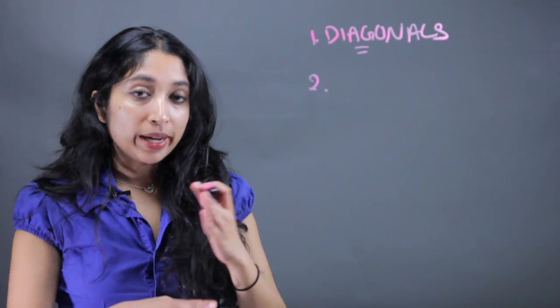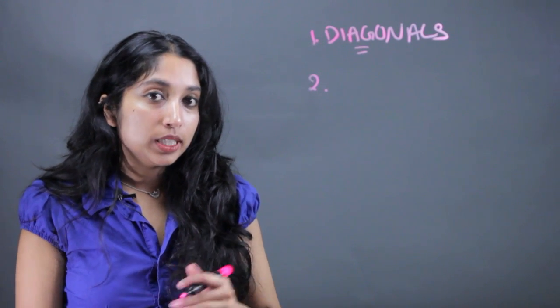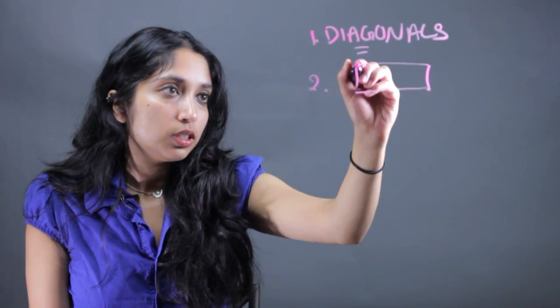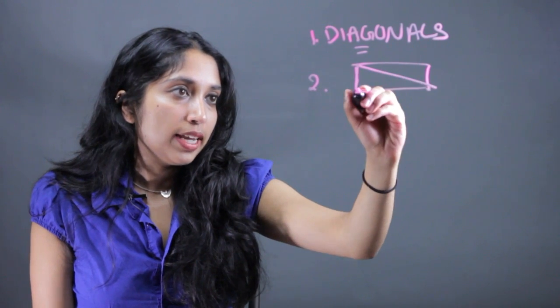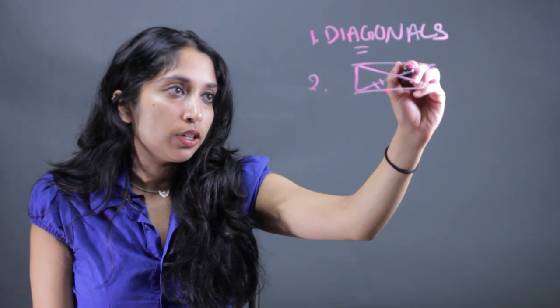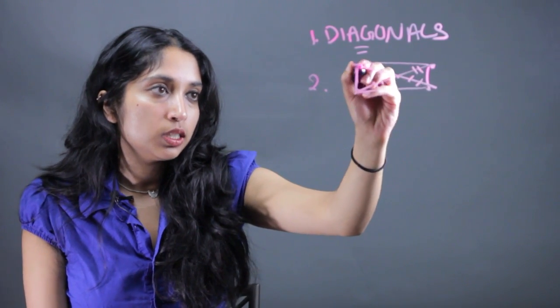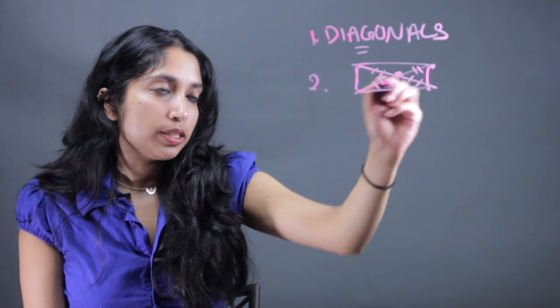Two, the diagonals bisect each other. What that means is if you have some sort of rectangle, these diagonals are going to divide each other into two equal pieces. So this is going to be an equal piece, this is going to be an equal piece. These guys are all going to be the same length.